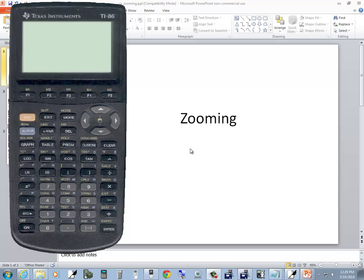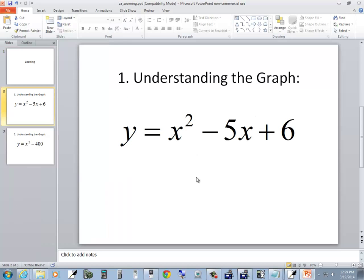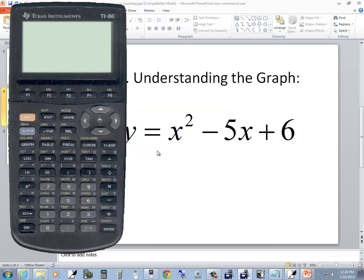Let's take a look at zooming on a TI-86 calculator. The first one we'll look at is x squared minus 5x plus 6. Maybe I'm just trying to understand more about the graph.